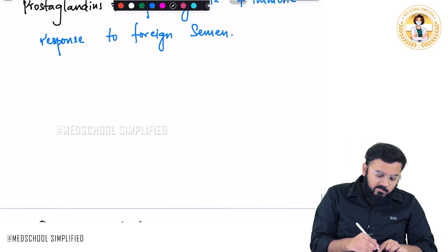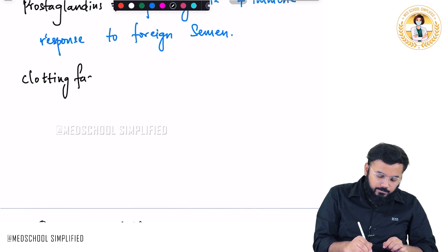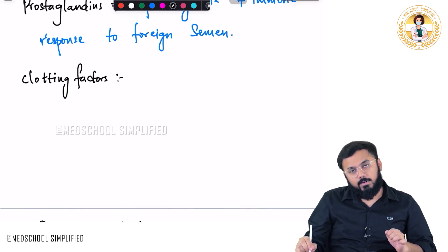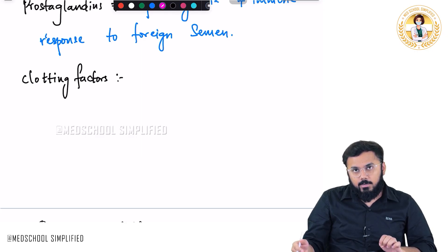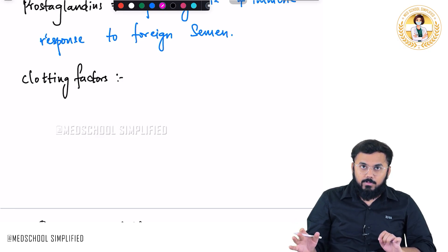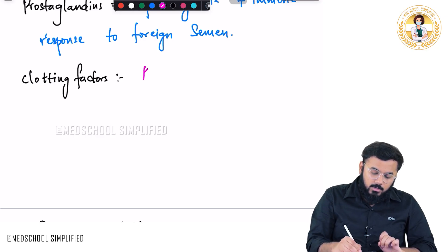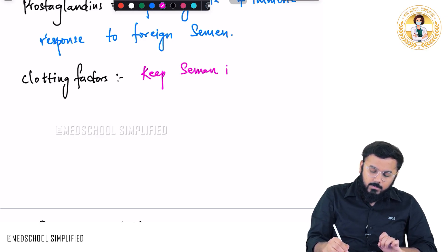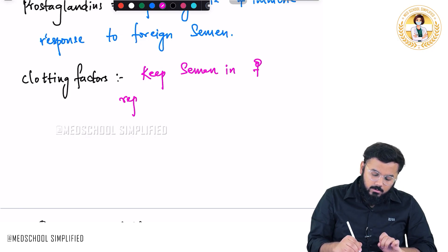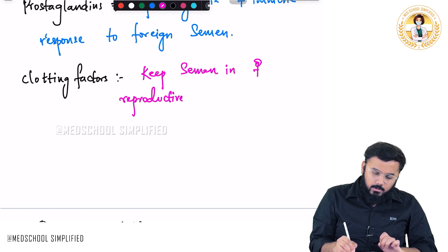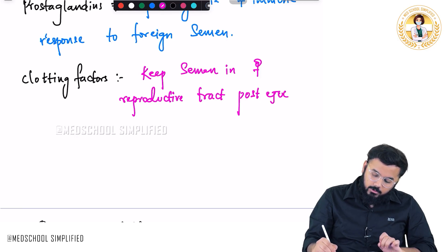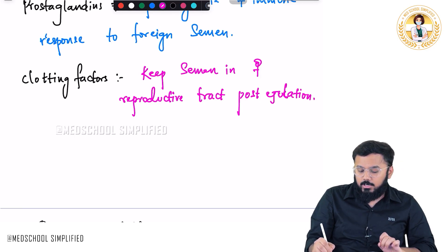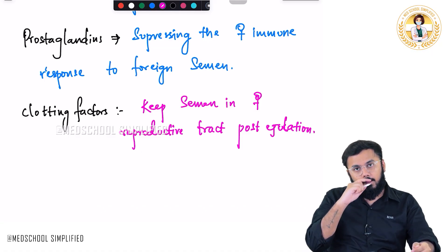There are also clotting factors released in the seminal fluid. After ejaculation, the semen could come out of the vagina. To prevent that, the clotting factors keep the semen within the female reproductive tract after ejaculation.